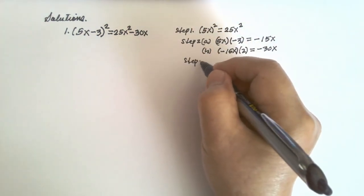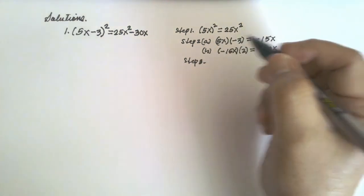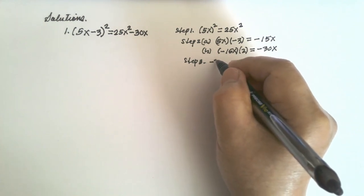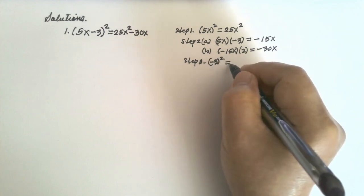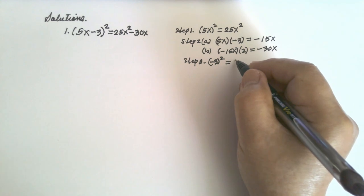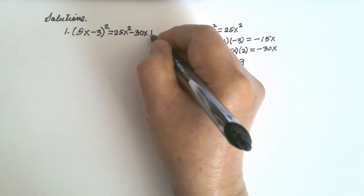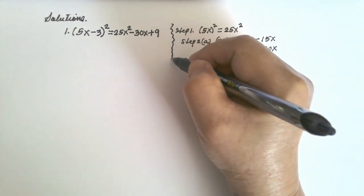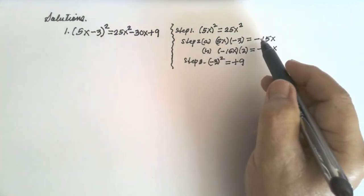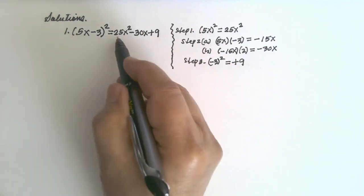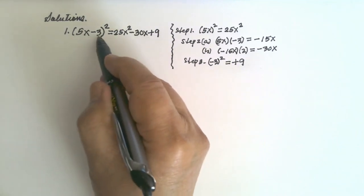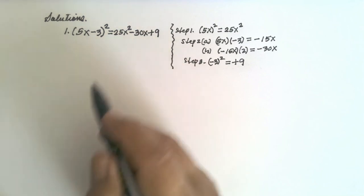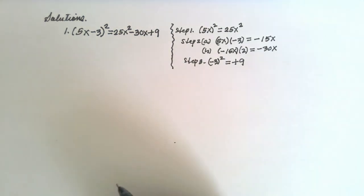Step number three: square the second term — negative 3 times negative 3 equals positive 9. So the answer is 25x squared minus 30x plus 9. You can do this mentally: square the first term to get 25x squared, multiply the first by the second and double it to get negative 30x, and square the second term to get positive 9.